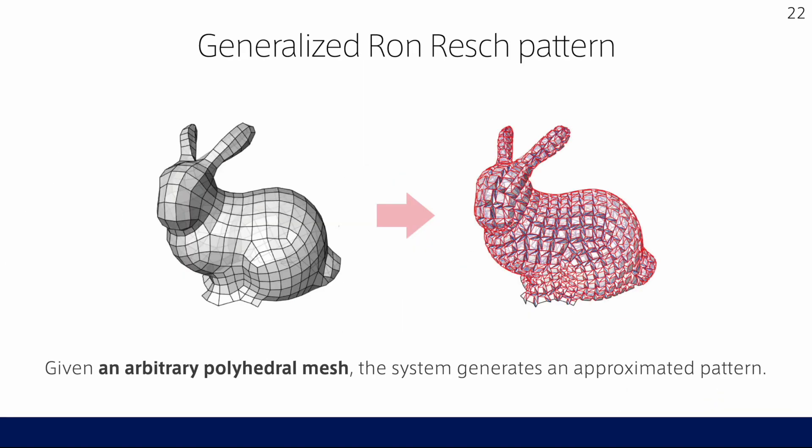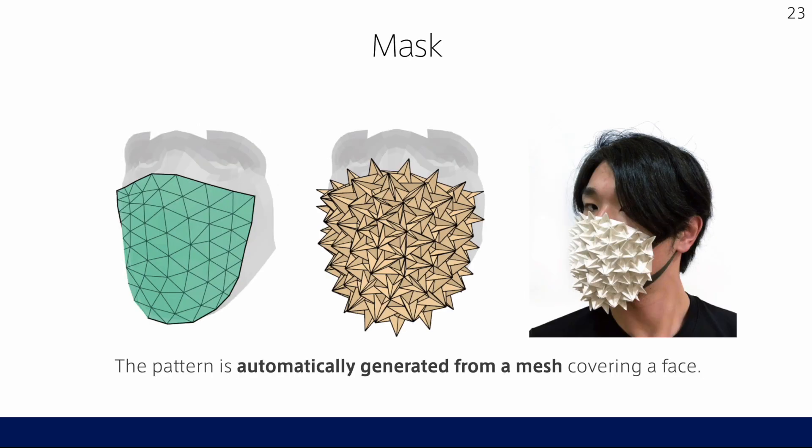Or, the user can also give an arbitrary polyhedron mesh as input. In this case, the system automatically generates an approximated origami pattern called a generalized Ronresch pattern. Using a mesh as input, this is an example of the mask — the user gives a 3D mesh covering the face, and the system generates a fancy pattern foldable from a sheet of paper.